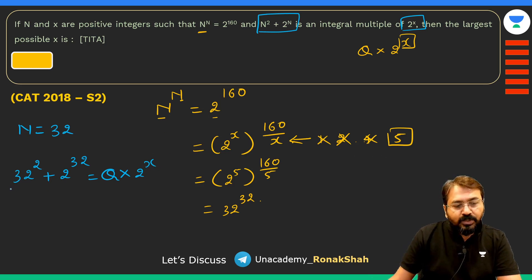That means we need to identify the maximum power of 2 that can be taken out as a common factor. So 32² is nothing—32 is 2^5, so (2^5)² is nothing but 2^10. So 32² can be written as 2^10 plus this 2^32 as it is. In fact, 2^32 can also be written as 2^10 × 2^22, which is equal to Q × 2^X.